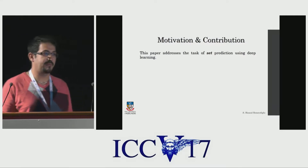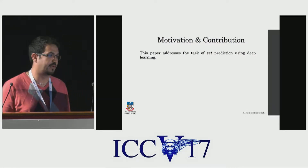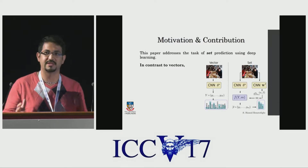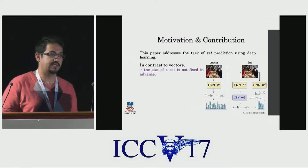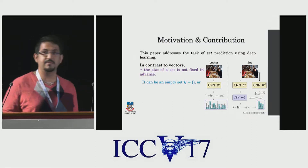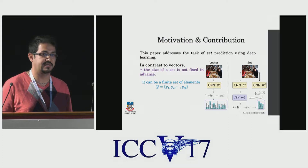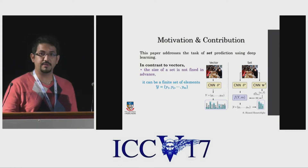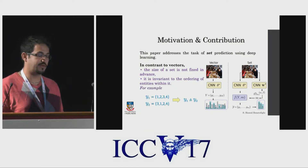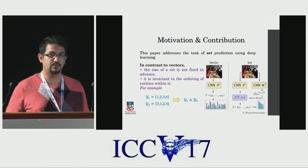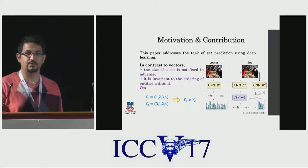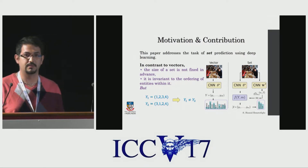As the title expresses, this paper addresses the task of set prediction using deep learning. What is a set, and what's the difference between a set and something like a vector, tensor, or matrix? In contrast to a vector, the size of a set is not fixed in advance — it can be an empty set or a finite set of elements. Another property is that a set is invariant to permutation: two sets whose elements are permutations of each other are by definition identical, which is not true for vectors, matrices, or tensors.